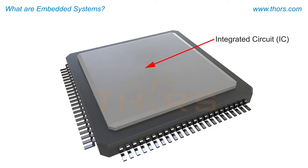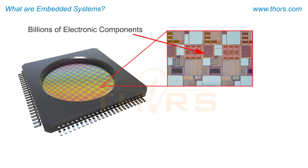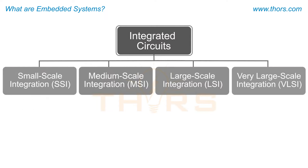An integrated circuit, or IC, is a microelectronic circuit which consists of thousands to billions of electronic components such as transistors, resistors, and capacitors that are packed into a single silicon wafer. ICs were created with the idea of integrating all electronic components in a miniature format.